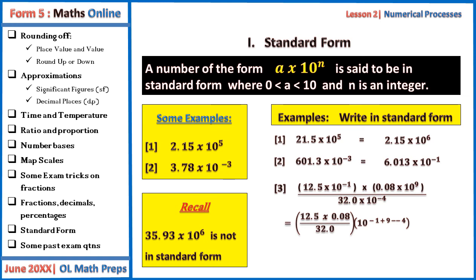And this will give us 0.03125 times 10 to the power 12. But this is not in standard form, so this will finally be 3.125 times 10 to the power minus 2 times 10 to the power 12, which gives us 3.125 times 10 to the power 10.